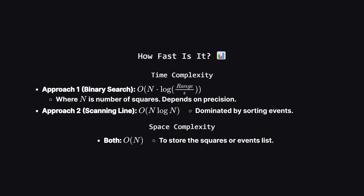So how do they compare? The binary search method's speed depends on how precise we want to be — it runs in O(n * log(range / epsilon)). The sweep line method is more predictable; its speed is dominated by the sorting step, running in O(n log n). In practice, both are efficient enough for this problem, but the sweep line is often preferred for exactness. Both approaches use linear space to store the data.